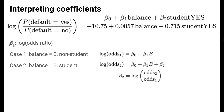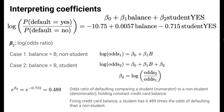We can use a similar process for the beta 2 coefficient. Beta 2 is a log odds ratio comparing a student to a non-student who have identical credit card balances. Using our estimates, the odds ratio is 0.489. This is the odds ratio of defaulting, comparing a student in the numerator to a non-student in the denominator, holding constant credit card balance. Equivalently, fixing credit card balance, a student has 0.489 times the odds of defaulting compared to a non-student — that is, for a fixed credit card balance, students are less likely to default than non-students.